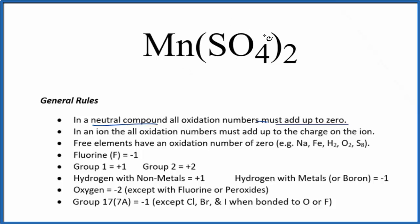For the sulfate, we know that in an ion, all the oxidation numbers are going to add up to the charge on the ion. So the entire sulfate ion has a 2 minus ionic charge. All of the oxidation numbers add up to minus 2.